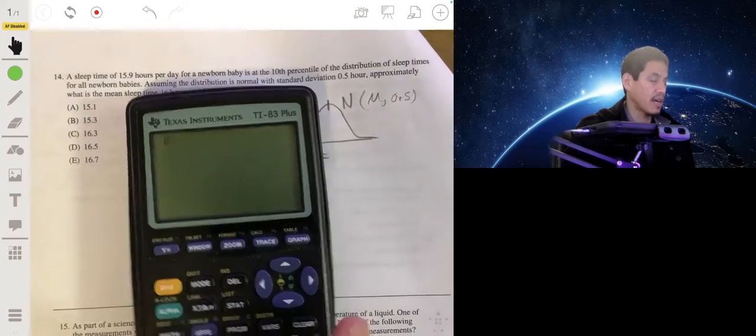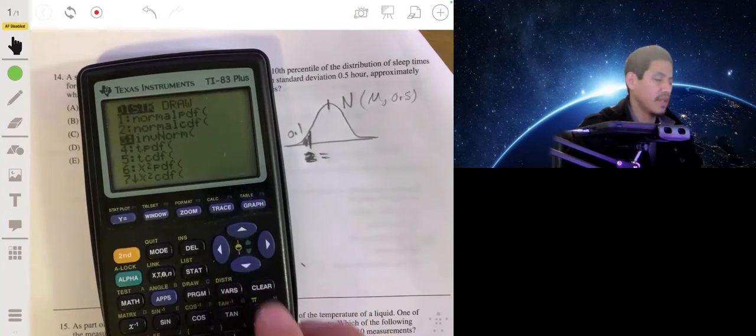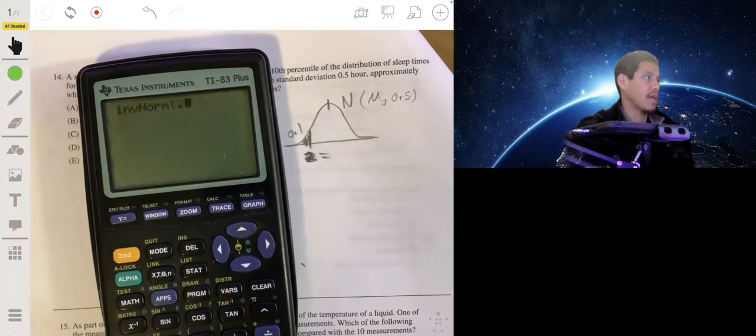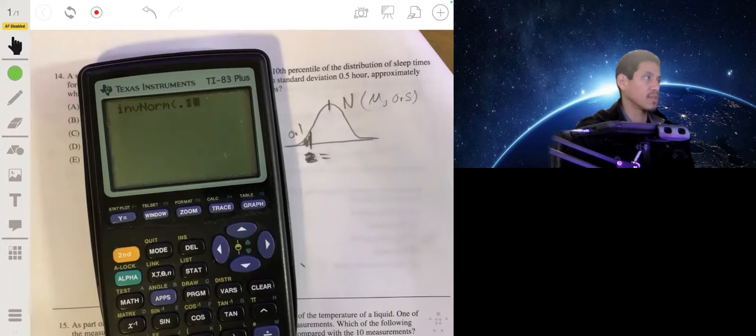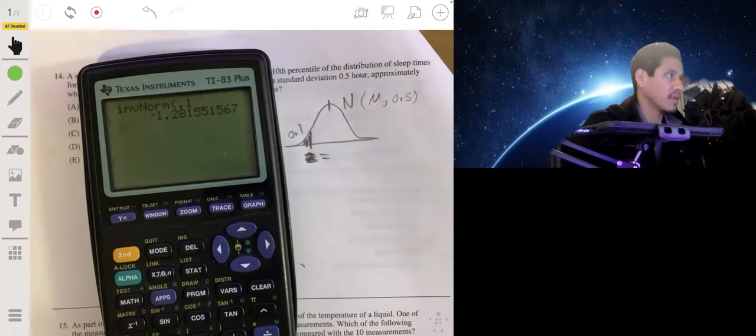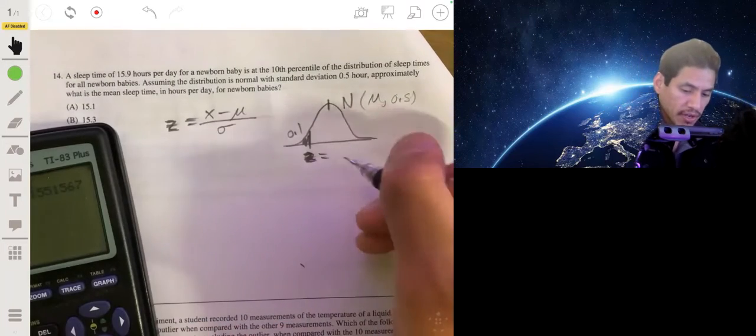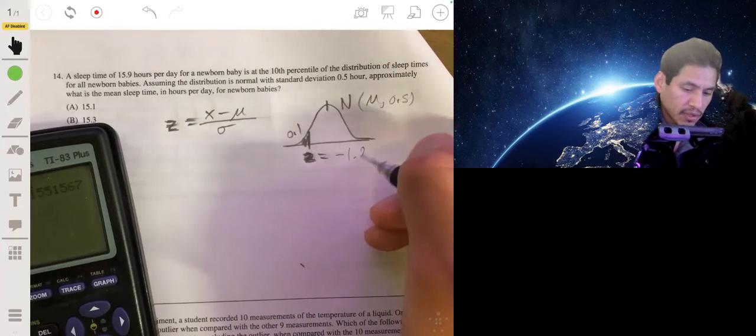So for this, we can use our calculator and use the inverse norm function, go to the distribution, inverse norm, and all you have to type is the area to the left, which is 0.1. If you don't type anything else, this will just assume that the mean and standard deviation is 0 and 1. So it's the standardized normal curve. So we have that z value here, and the standard normal curve is negative 1.28.